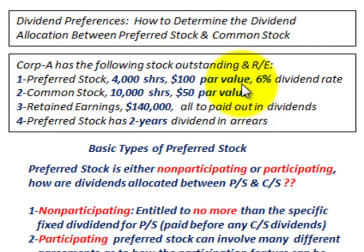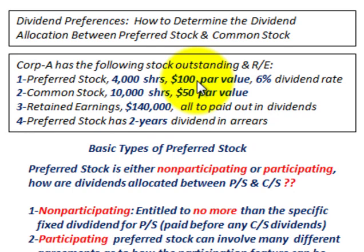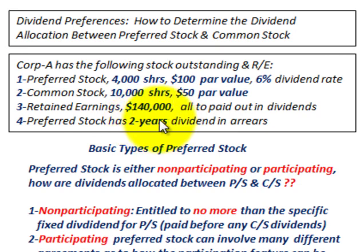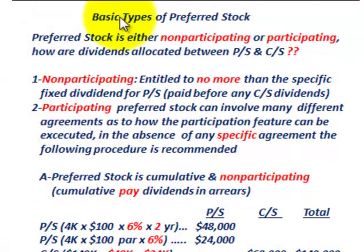There are $140,000 in retained earnings, and all are going to be paid out in dividends between the preferred stock and the common stock. The preferred stock has two years of dividends in arrears — two years of dividends that haven't been paid — and these must be paid before any dividends are paid out for the current year, for either the preferred stock or the common stock.